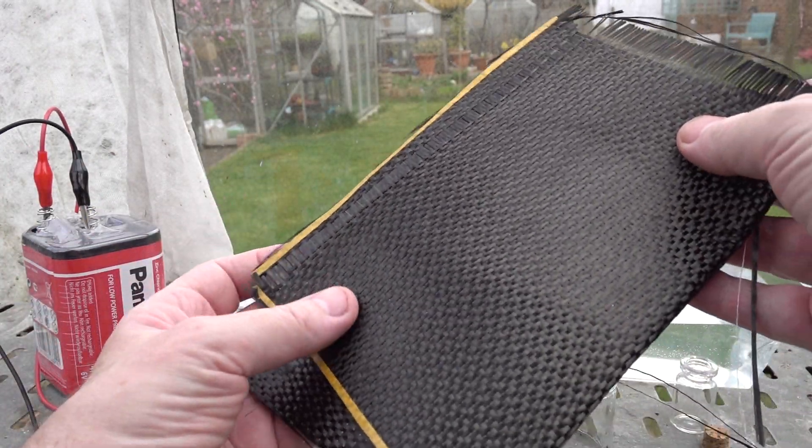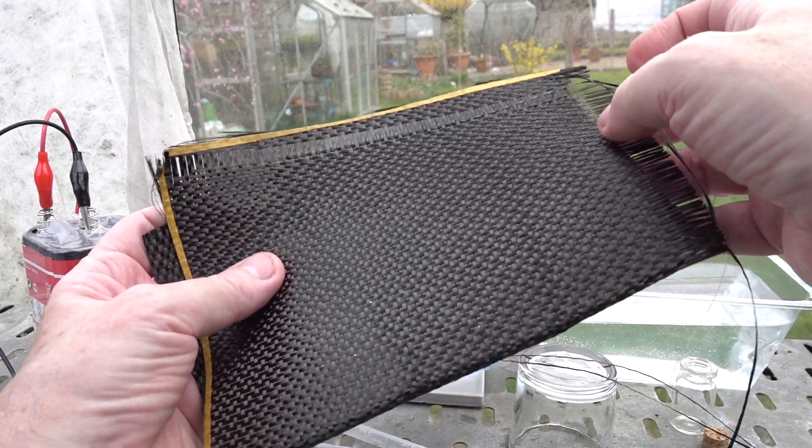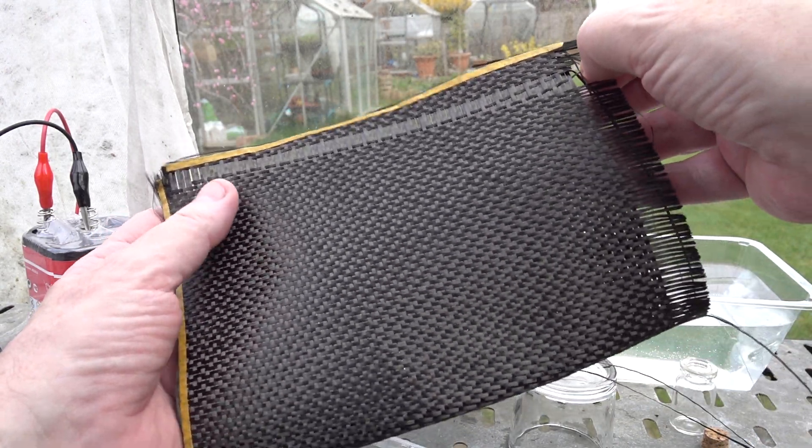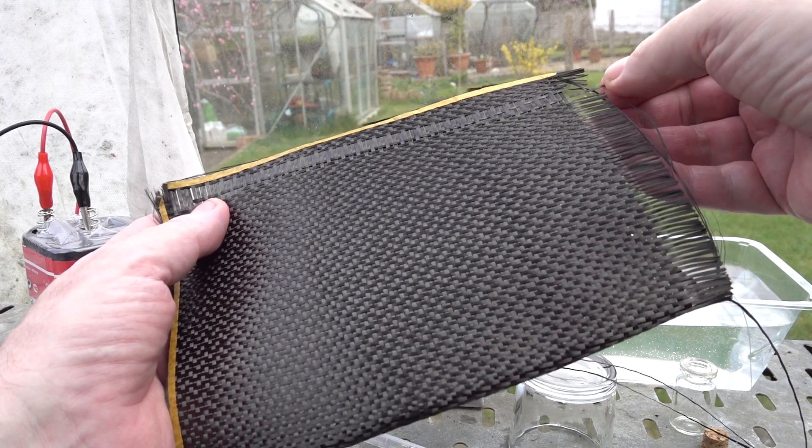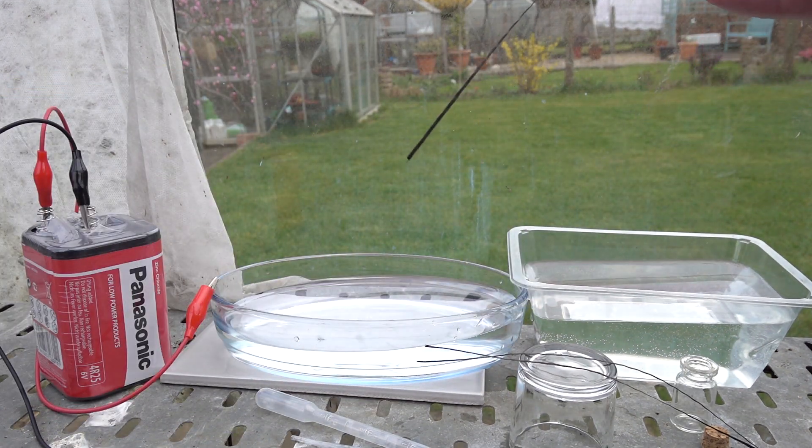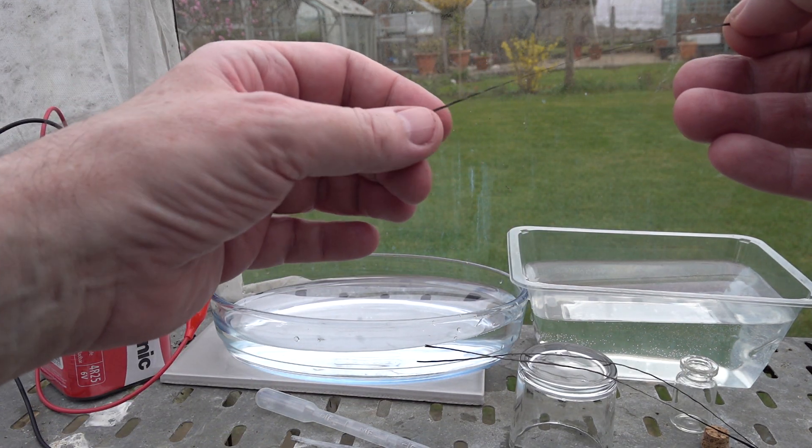We're making the electrode from a strand of carbon fiber from this woven sheet, very inexpensive to buy online. Once you cut the threads they will come out really easily, as you saw that one.